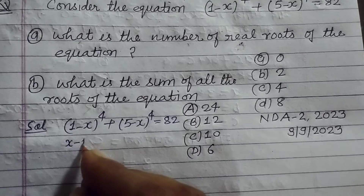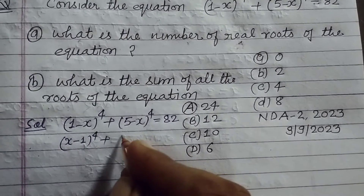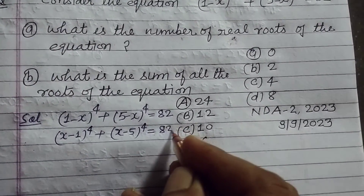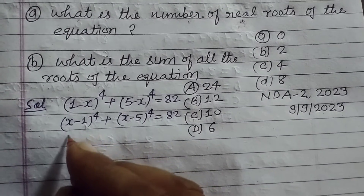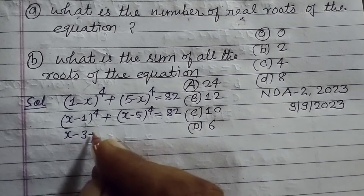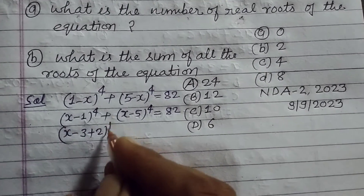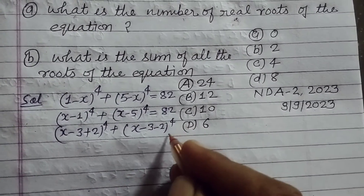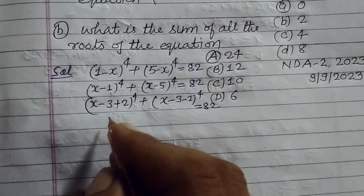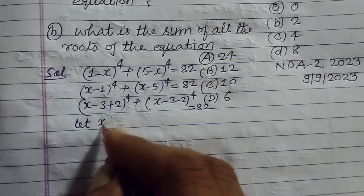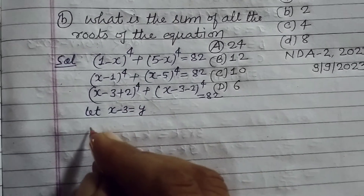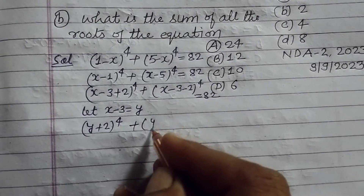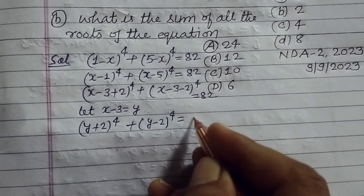We rewrite it as (x minus 1) to the power 4 plus (x minus 5) to the power 4, because the power is even so there is no effect of changing sign. We then rewrite it as (x minus 3 plus 2) to the power 4 plus (x minus 3 minus 2) to the power 4 equal to 82. Now let x minus 3 equal to y.